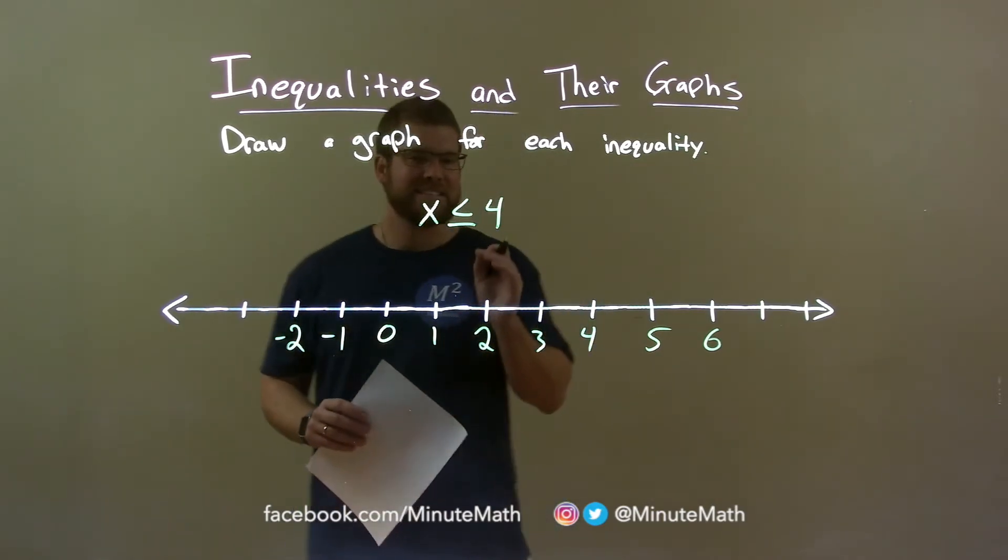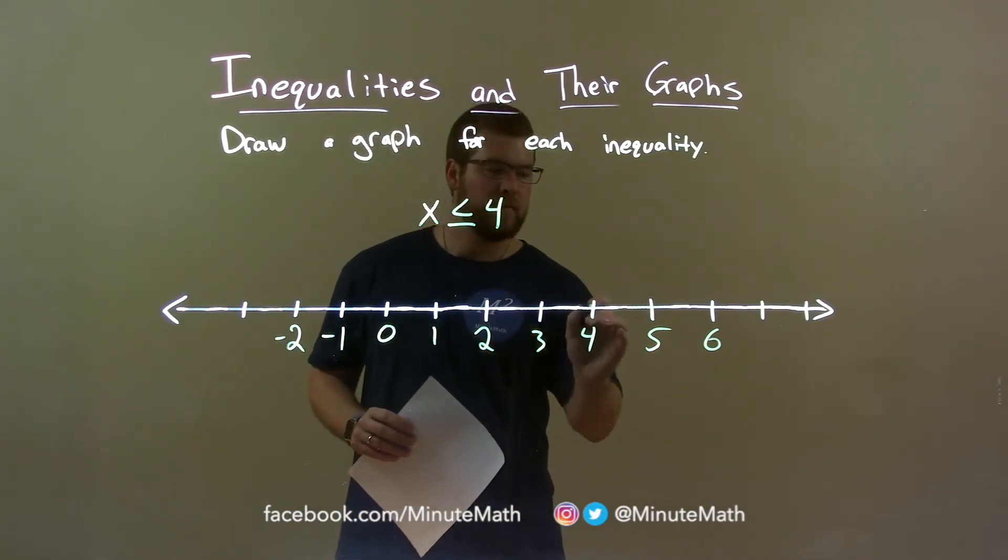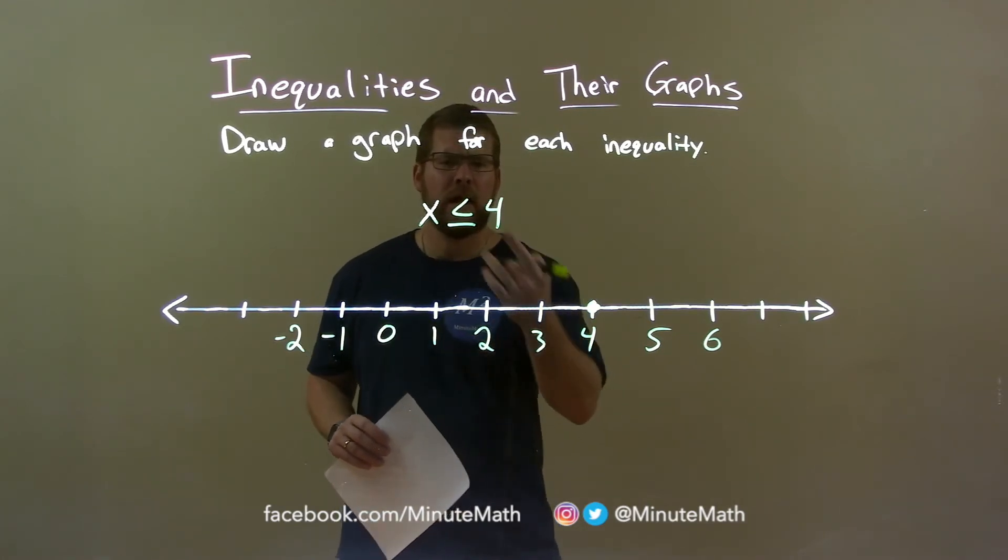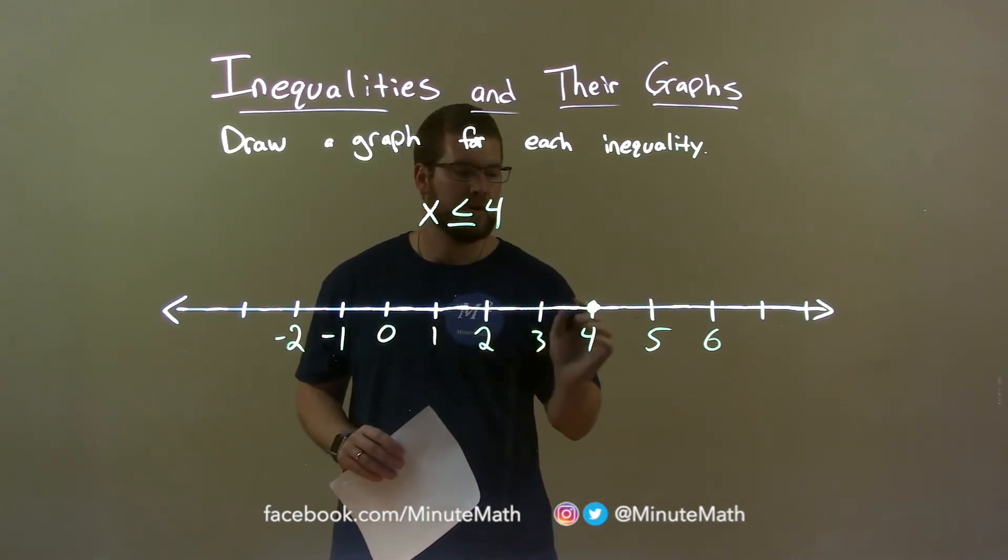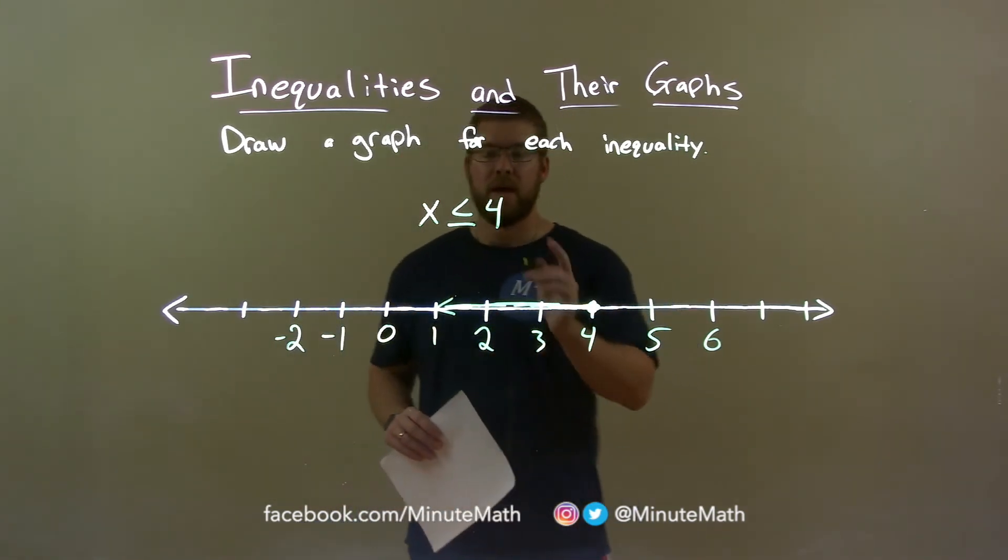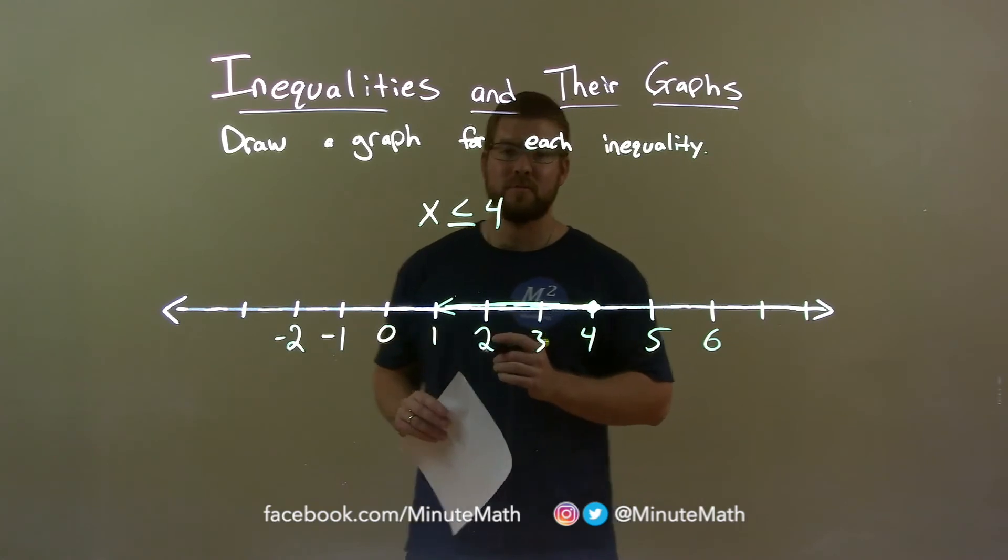Well, they tell us that x can equal 4. It means a closed circle right there at 4. Now x is also less than 4, so we shade it to the left and there we have our answer: x is less than or equal to 4.